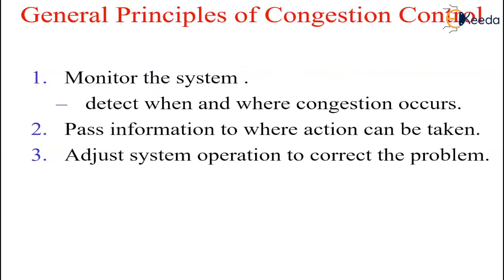Open loop solutions attempt to solve the problem by good design, in essence to make sure congestion does not occur in the first place. Once the system is up and running, mid-course corrections are not made. Tools for doing open loop control include deciding when to accept new traffic, deciding when to discard packets and which packets are to be discarded, as well as making scheduling decisions at various points in the network. All of these make decisions without regard to the current state of the network.